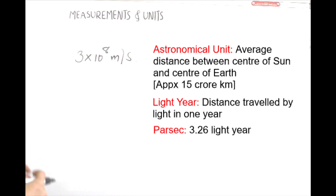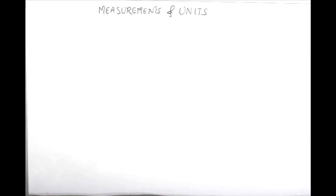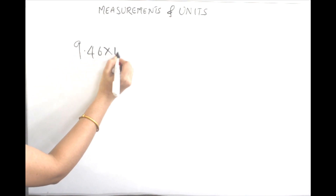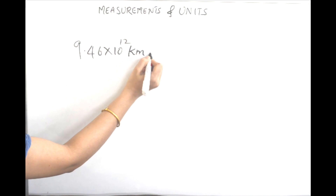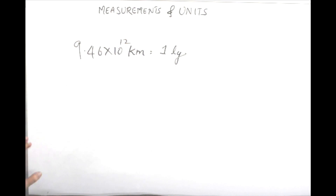Next, what is a parsec? Parsec is short for parallactic second. 1 parsec is equal to 3.26 light years. 1 light year is equal to 9.46 × 10¹² km.